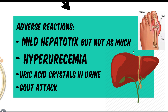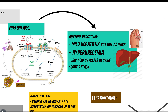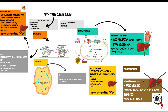The adverse reactions of pyrazinamide: it is mildly hepatotoxic, but not as much as rifampicin and isoniazid. Pyrazinamide causes hyperuricemia, gout attacks, and uric acid crystals in the urine. The main things to remember are hyperuricemia and gout attack.